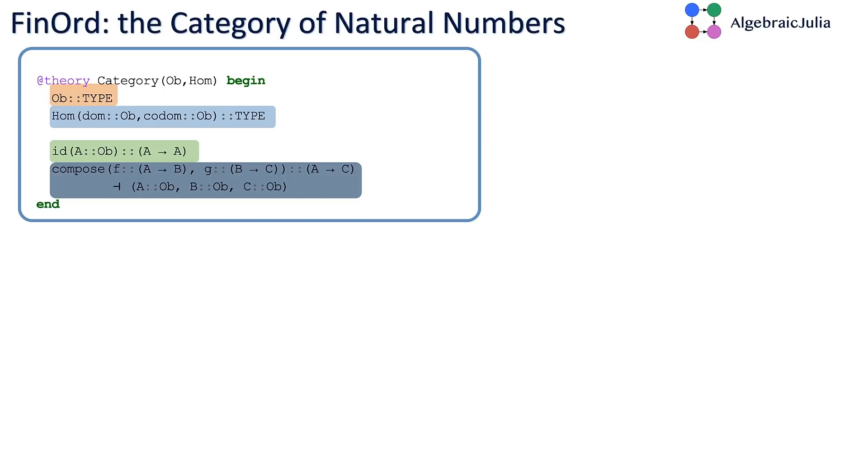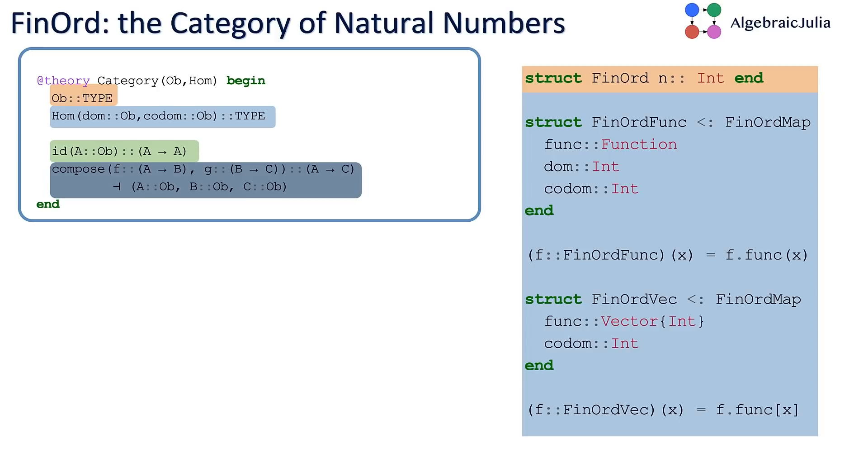Another thing that is a category is a graph where the HOMs are the set of paths. The objects are vertices, and the HOMs are paths, and you can concatenate paths—that's the composition rule. If you have a path from A to B, and then a path from B to C, you can compose them into a path from A to C. So if you have in your mind categories are like sets and functions, and also categories are like paths in a graph, you'll get the right intuition.